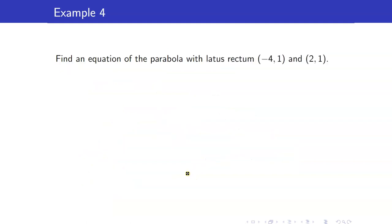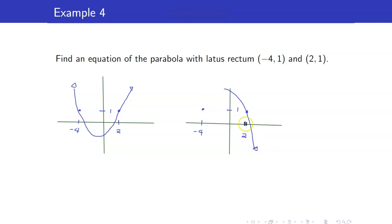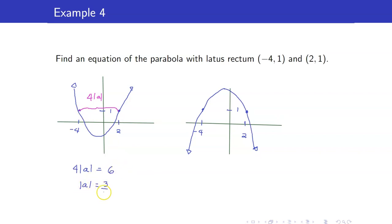Next, let us find the equation of the parabola with latus rectum from (negative 4, 1) to (2, 1). Take note that if this is the case, there are two possible parabolas. Your parabola can be either going up or going down. We need our a and our vertex. The distance between the two endpoints of the latus rectum is equal to 4 times the absolute value of a. The distance between these two points is 2 minus negative 4, that's 6. So the absolute value of a is equal to 3 halves.